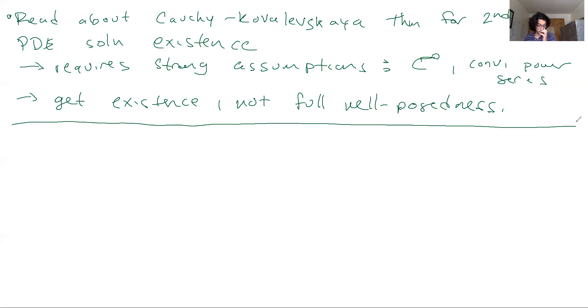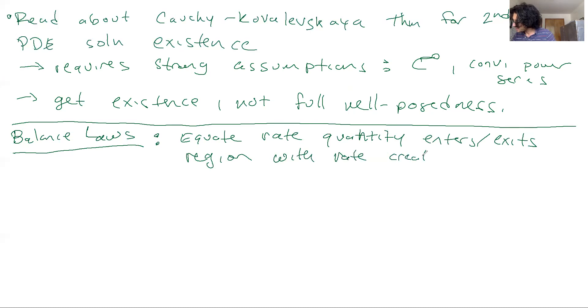The thing that I want to get into now before we move on to other solution methods is the notion of using balance laws to derive PDEs. The idea with a balance law is that we're going to equate different rates that some quantity enters and exits a region with the rate it's created. And as long as you have formulas associated with entry, creation, destruction of some quantity, you can build a PDE.